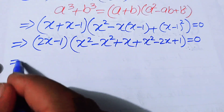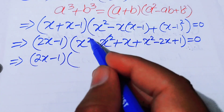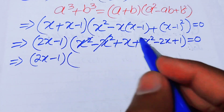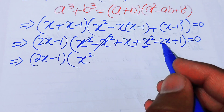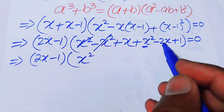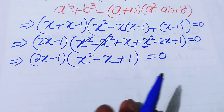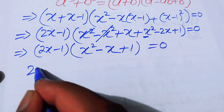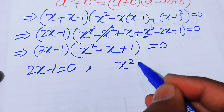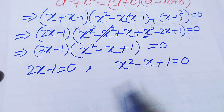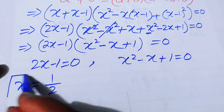Simplifying gives (2x−1)(x²−x+1) equals 0. This yields two sub-cases: 2x−1 = 0, giving x = 1/2, and x²−x+1 = 0.